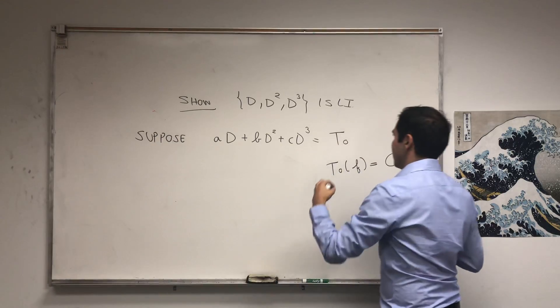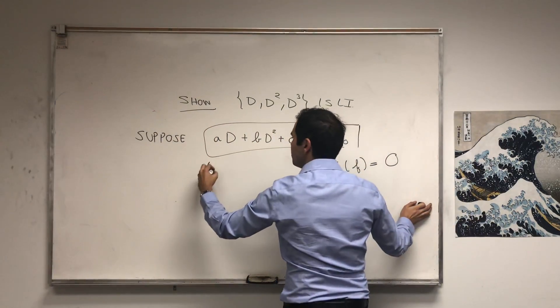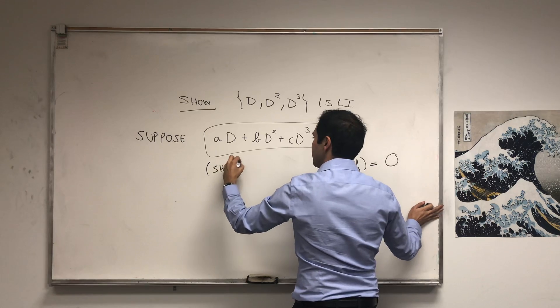Now, what we have to show is that a equals b equals c equals zero.